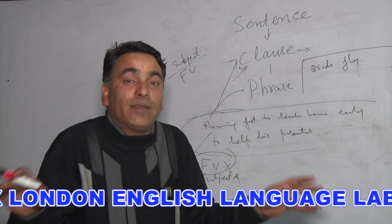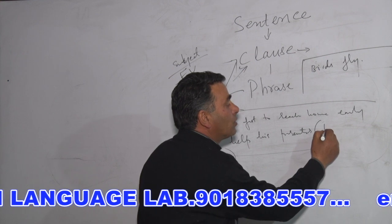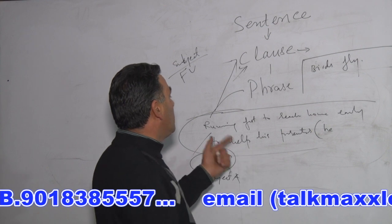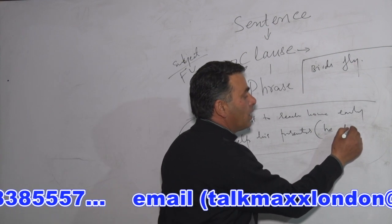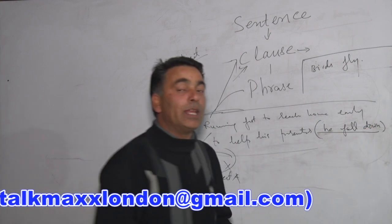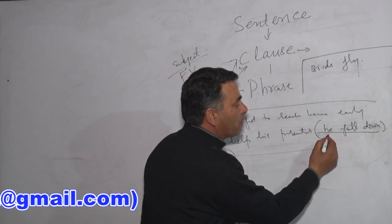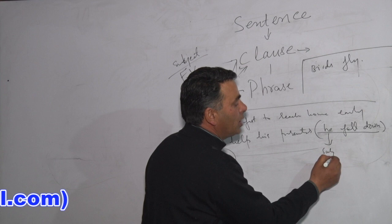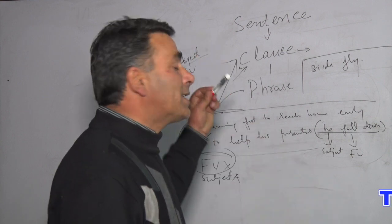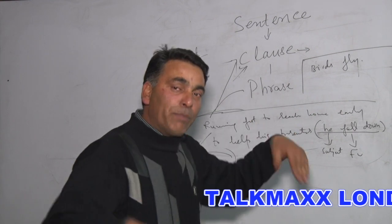We don't get that sense of completion. But if I add only two or three words — say, 'running fast to reach home early to help his parents, he fell down' — now if you see, it makes a complete sentence. What makes it into a complete sentence is the presence of a subject and the presence of a finite verb. That was what was missing in the phrase.